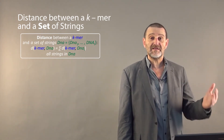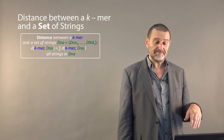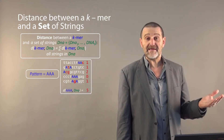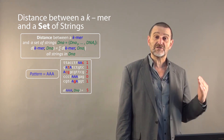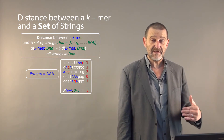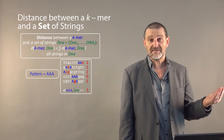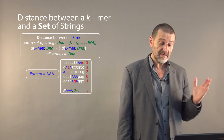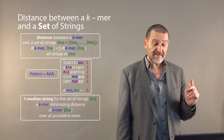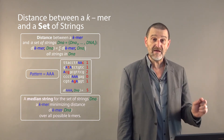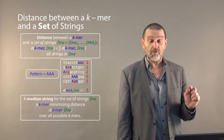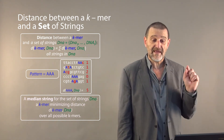What is the distance between a k-mer and a set of strings? In this case it's simply the sum of distances between a pattern and each string in the set. For example, for pattern AAA and a set of strings shown on this slide, we can compute the distance with every string and then simply sum up all the distances — the result is five. A median string for the set of strings DNA is a k-mer pattern minimizing the distance between pattern and DNA over all possible k-mers.